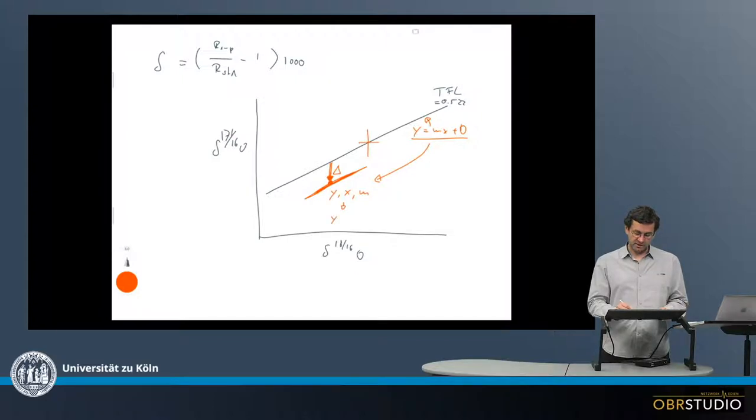With this, we can make an equation, which is y equals mx plus b. In this case, b is delta, the capital delta here. So we can rearrange this and then get y minus mx equals capital delta.